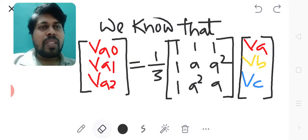We know that the sequence voltages in terms of phase voltages: VA0, VA1, VA2 equals 1 by 3 into 1 1 1, 1 a a square, 1 a square a, into VA VB VC. Here VA VB VC are the phase voltages of a balanced system.